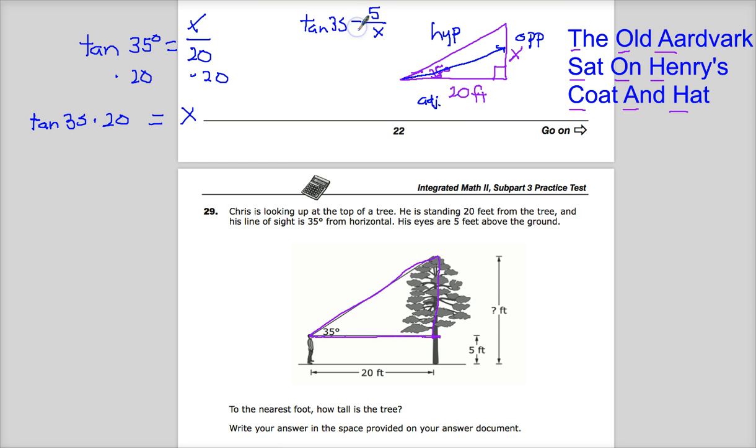In this case, you can't just multiply by X on both sides. And you definitely don't multiply by 5. Because to get rid of it, I need to multiply by X on both sides. And then, that just gives me tangent 35 times X equals 5. So, I'd have to divide everything by tangent 35.